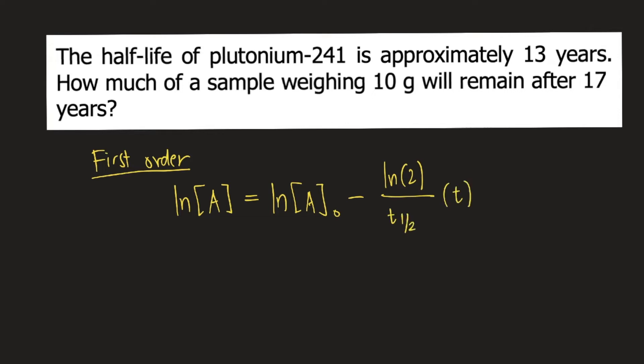Let's define each variable. A is the remaining amount, A₀ is the initial amount, t₁/₂ is the half-life, and t is time.